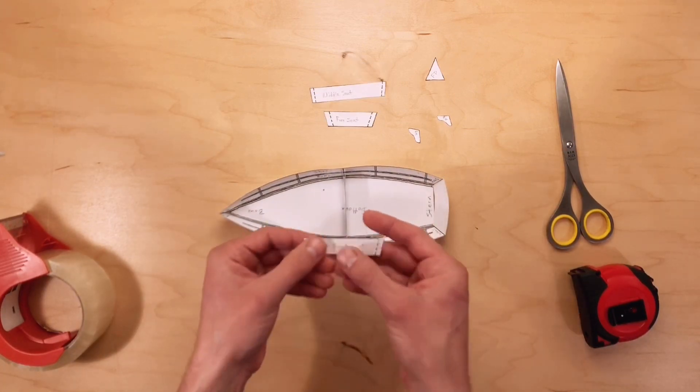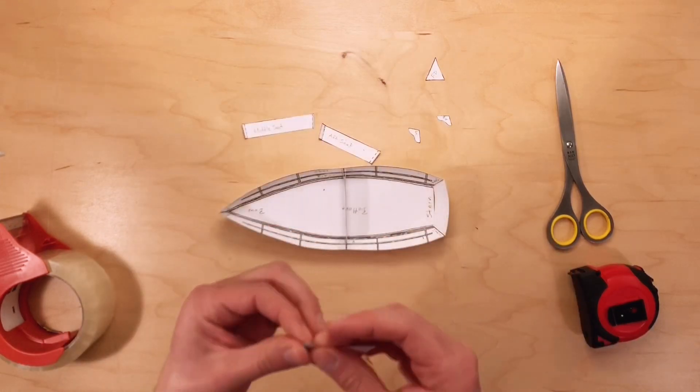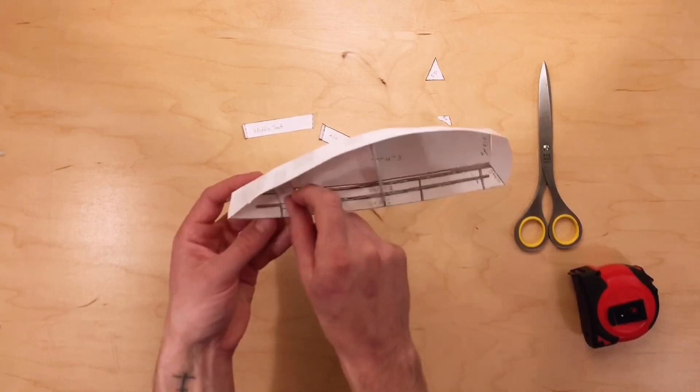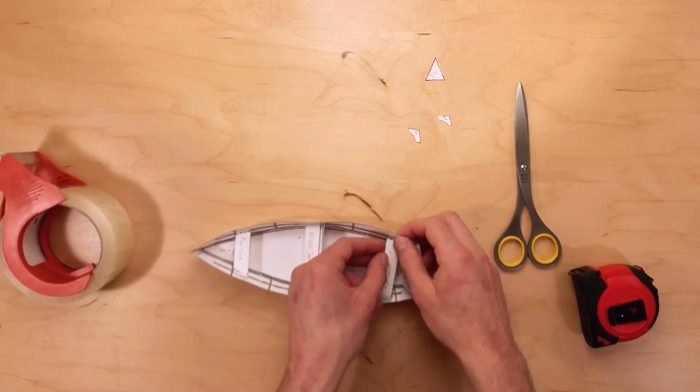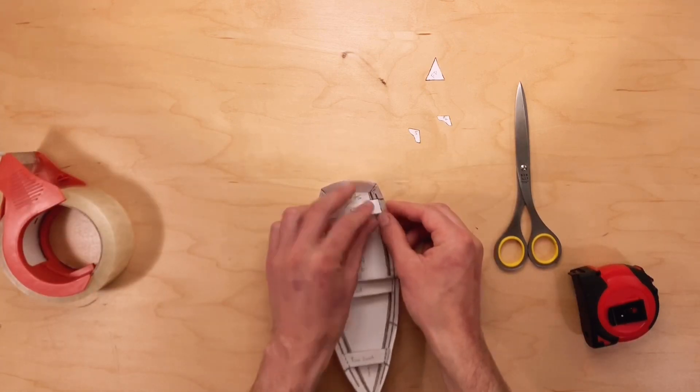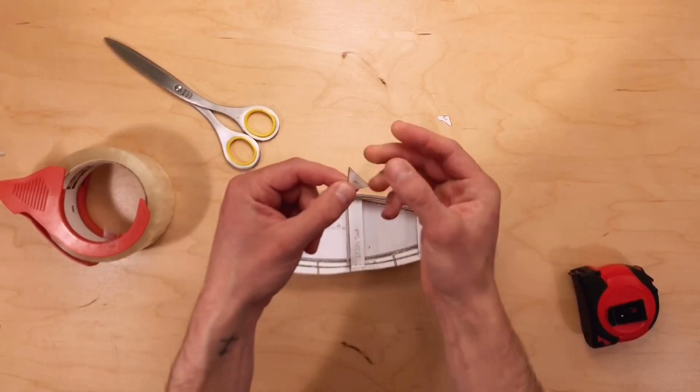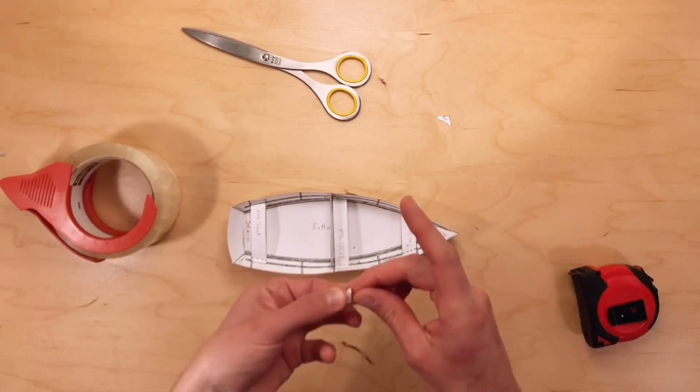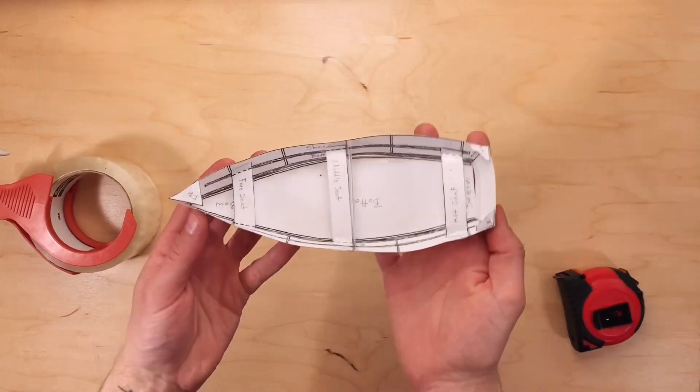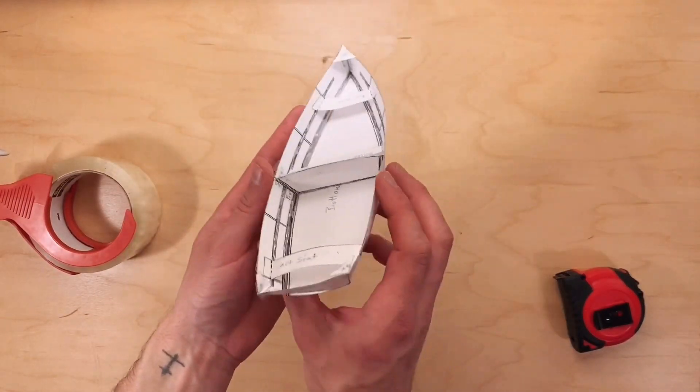Insert the seats by bending the tab on the ends up and using tape to fasten them to the boat. Now for the finishing touches. Insert the foredeck in the bow of the boat and use small pieces of tape to attach the quarter knees by the transom. The assembly of our boat is complete. Nice work.